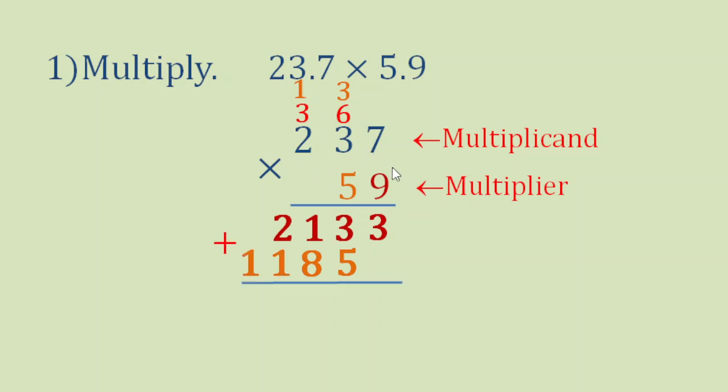Now we are going to add vertically, adding the corresponding digits. So 3 by itself, copy down. 3 plus 5 is 8. 1 plus 8 is 9. 2 plus 1 is 3. And then 1 by itself, copy down.